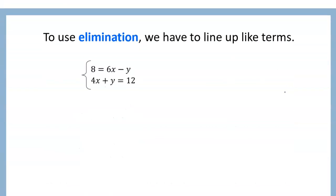To use elimination, we're going to need like terms on top of each other — we need them lined up. In this problem, we have an 8 and a 4x. Are those like terms? They are not, because they don't have the same variable — this one doesn't have a variable and this one has an x. We can only combine x terms with other x terms. These terms are not the same, and the equal sign isn't even lined up. So we need to manipulate these equations to make the terms line up.